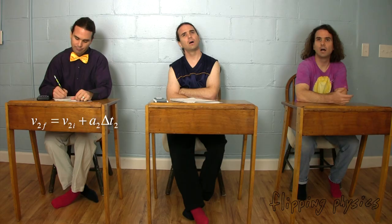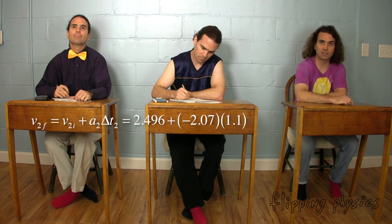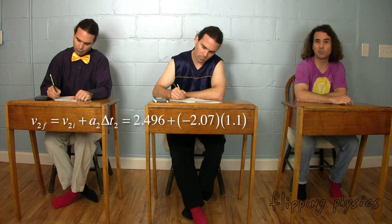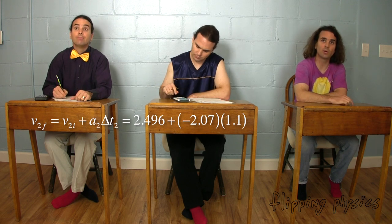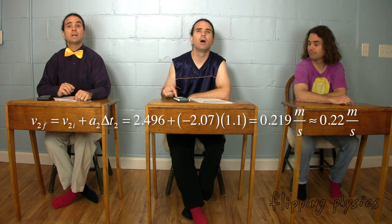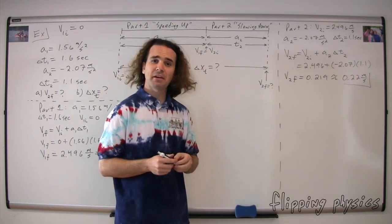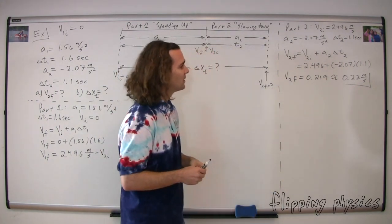Mr. P.: And we can now solve for the final velocity for part two — Part A. Bo, please go ahead. We use the same equation but with different subscripts: velocity final for part two equals the velocity initial for part two plus the acceleration two times the change in time two. We have all the numbers: final velocity for part two equals 2.496 plus negative 2.07 meters per second squared times 1.1 seconds, which gives us 0.219, or 0.22 meters per second with two significant figures. Great — we figured out the final velocity for part two: 0.22 meters per second. This is Part A.